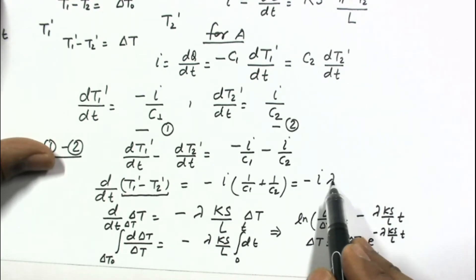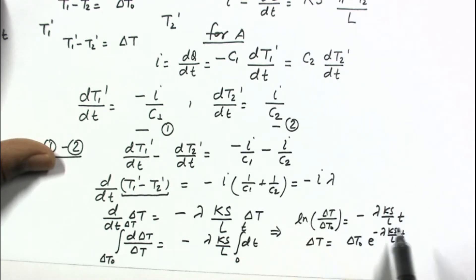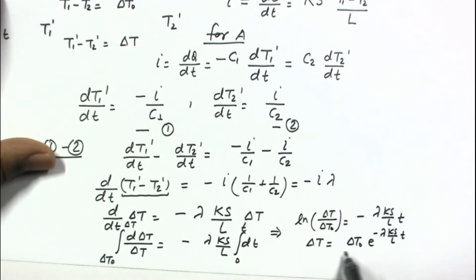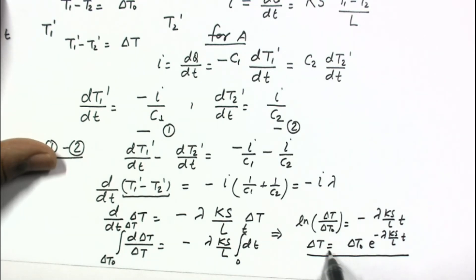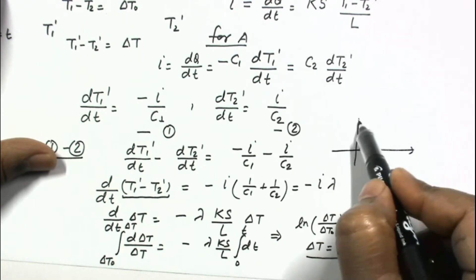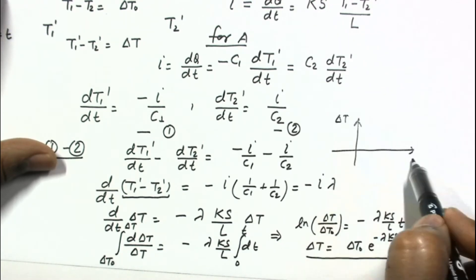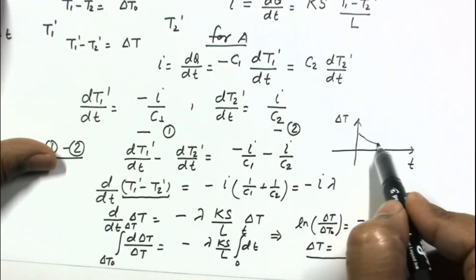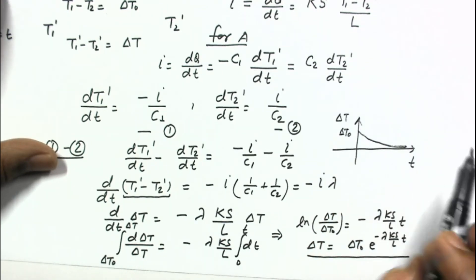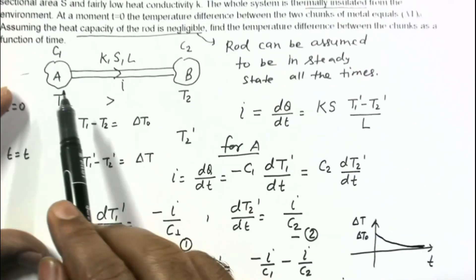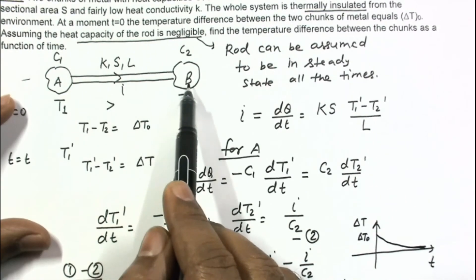Lambda equals 1 over C1 plus 1 over C2, so this is the final answer to this problem. We can see that delta T, the temperature difference, is varying exponentially — specifically decreasing exponentially. If we draw a graph of delta T versus time, it starts at delta T0 initially and ultimately approaches zero. Finally, the temperatures of the two chunks will become equal.